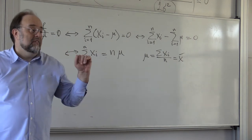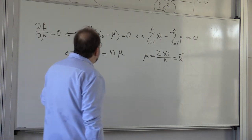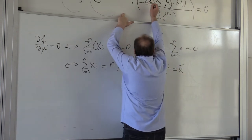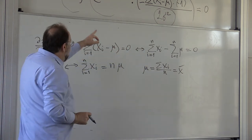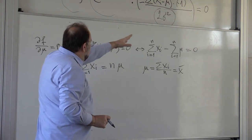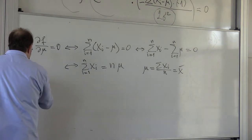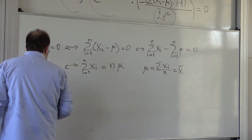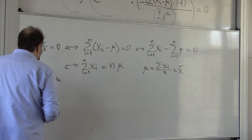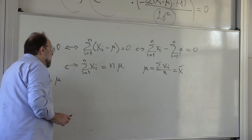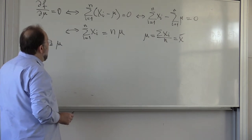So maximum likelihood estimation is precisely the sample mean. We know that the expected value of the mean is the true mu — this is an unbiased estimator. And the variance of this estimator is 1 over n times the variance of x.